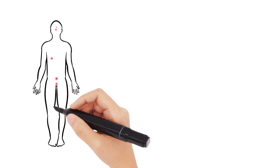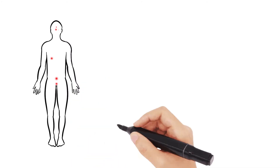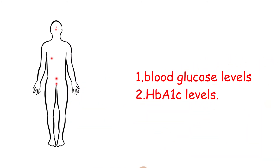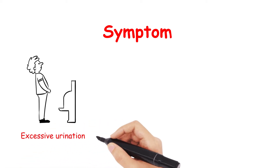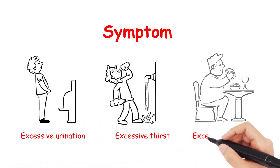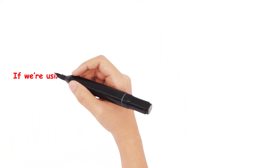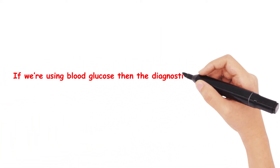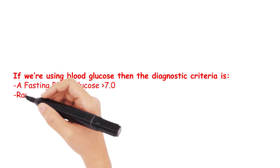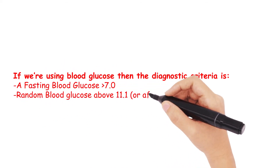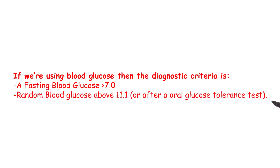The diagnosis really depends on whether the patient is symptomatic or not, or if we're using blood glucose levels or HbA1c levels. A patient is deemed symptomatic when they are polyuric, polydipsic, or polyphagic — in simple terms, excessive urination, excessive thirst, or excessive appetite. If we're using blood glucose, the diagnostic criteria is a fasting blood glucose above 7, a random blood glucose above 11.1, or after an oral glucose tolerance test.